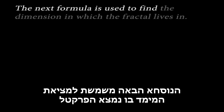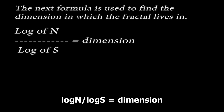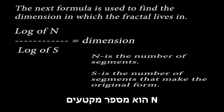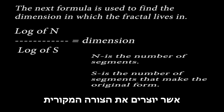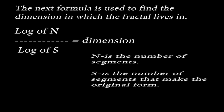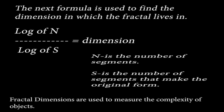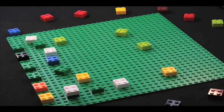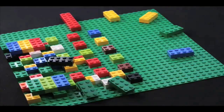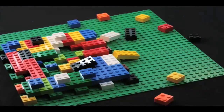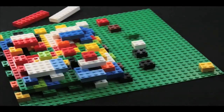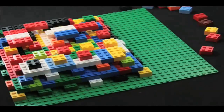The next formula is used to find the dimension in which the fractal lives in: log of n over log of s equals the dimension. n is the number of segments, and s is the number of segments that make the original form. Fractal dimensions are used to measure the complexity of objects.